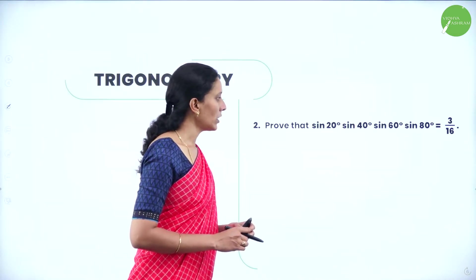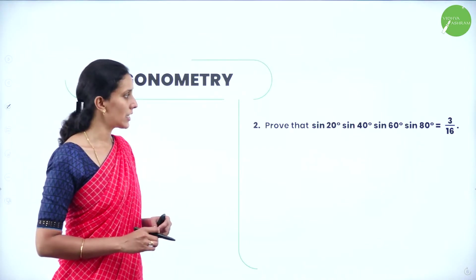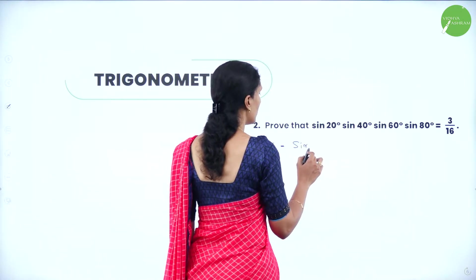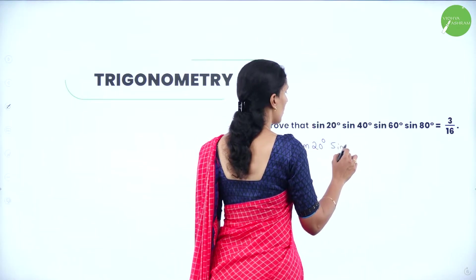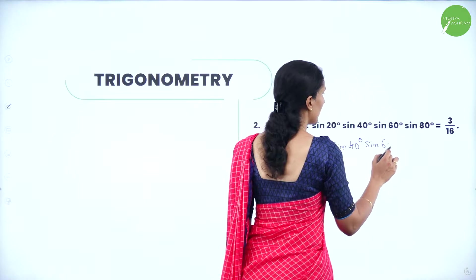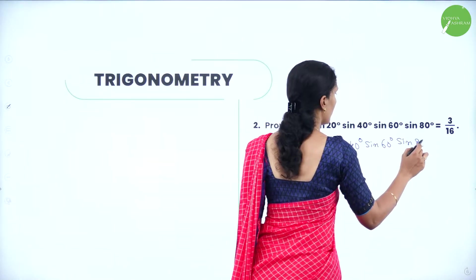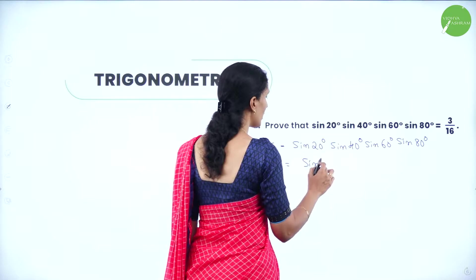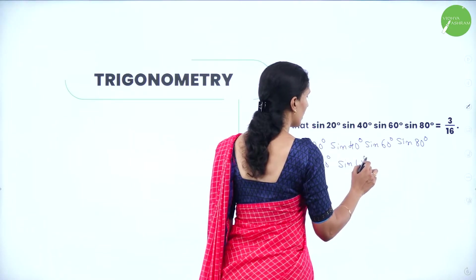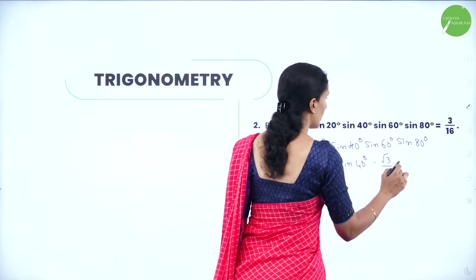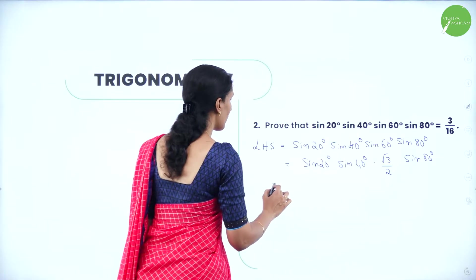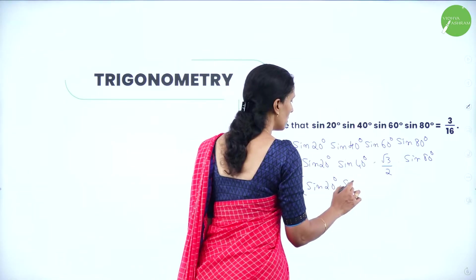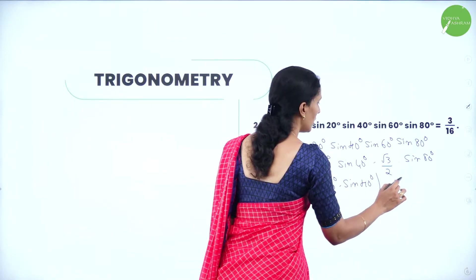Next question: prove that sin20°·sin40°·sin60°·sin80° = 3/16. Consider the left hand side: sin20°·sin40°·sin60°·sin80°. We know sin60° = √3/2, so we keep √3/2 aside and work with the product sin20°·sin40°·sin80°.